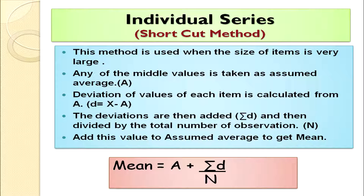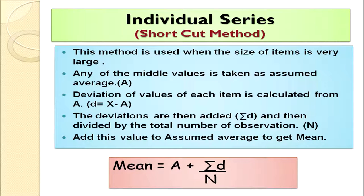Then take the deviation of each item value. Deviation d = item value − assumed average (A). The deviations are then added up to get Σd. Divide Σd by the total number of observations n, and add the result to the assumed average. So the formula is: x̄ = A + (Σd / n).